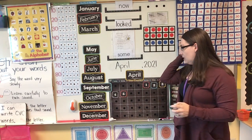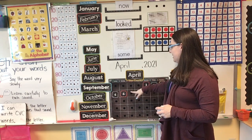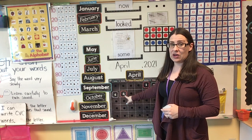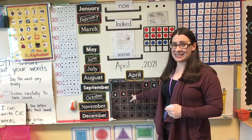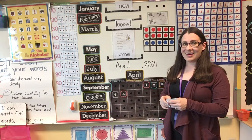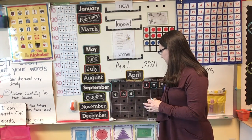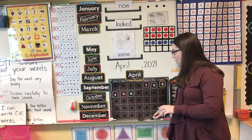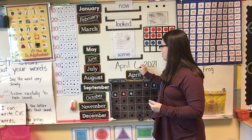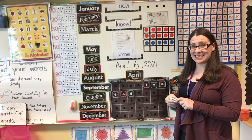Now let's look at our calendar. We can see that yesterday was April the 5th. Do you know what number I need here for today? Six. The numbers always go in order, don't they? So April 6th, 2021 is the date today.